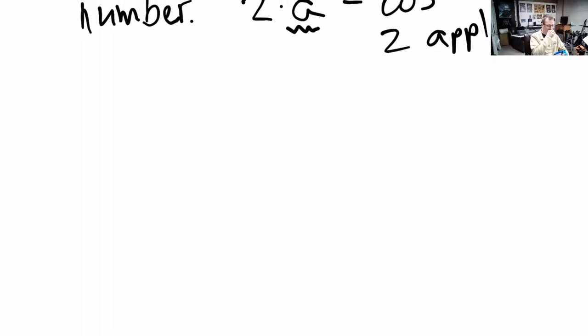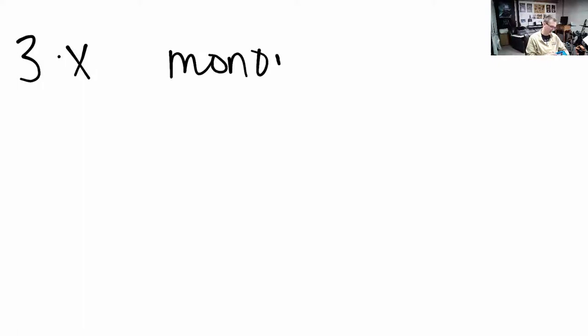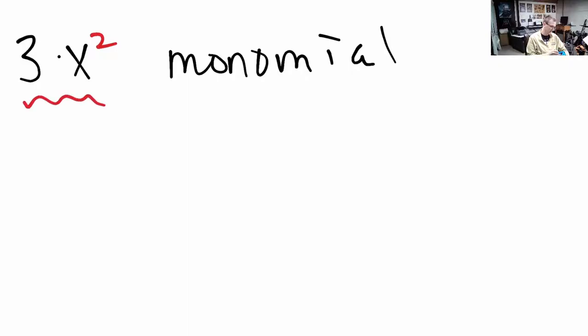The next thing we're going to talk about is how you name these different things. When you've got just one variable multiplied by a number - let's say we've got a variable X times a number like three - this is an example of a monomial. Mono meaning one. This is a monomial, just one term. There's just a product here, no sums or differences.